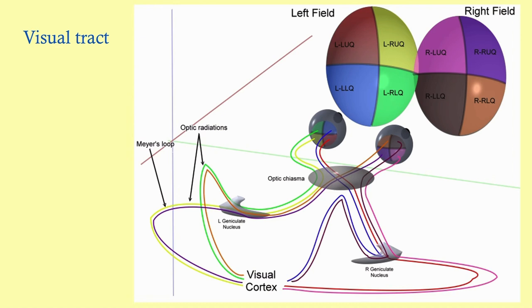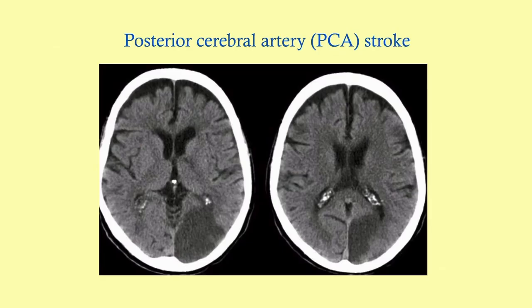These are the visual tracts. I have a whole video on visual tracts, so I recommend going to watch that — it will make this make a lot more sense. Here's the PCA stroke on CT — you can see the hypoattenuation on the posterior side.